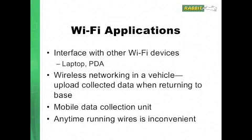So what do Wi-Fi applications buy you? You can interface with other Wi-Fi devices such as laptops, PDAs, and other computers. One possible application is wireless networking in a vehicle. Say you have a truck that goes about its daily route — maybe it makes deliveries or collects some sort of data along the way. You can keep all that data on the truck, and once the truck gets back to the home base, it can transmit that collected data wirelessly without having to move the data manually — it can just automatically happen once it gets within range of your Wi-Fi network. You can also use Wi-Fi in a mobile data collection unit, such as a handheld device carried around a warehouse, or any time running wires is inconvenient.